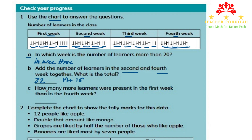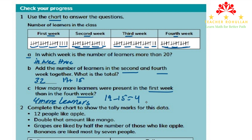In question C, it says: how many more learners were present in the first week than in the fourth week? In the first week we had 19 learners, and in the fourth week we have 15. So 19 minus 15 is 4. We can say 4 more learners. We can also write 19 minus 15 equals 4. We are done with question 1.